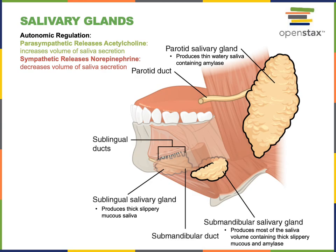There are three pairs of salivary glands located just outside of the oral cavity that secrete saliva through ducts into the oral cavity. The parotid salivary glands are the largest salivary glands, located just lateral to the masseter. They produce a thin, watery saliva that contains a high concentration of the digestive enzyme amylase, which initiates chemical digestion of carbohydrates.